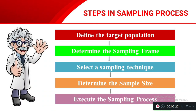Next we will see the steps in the sampling process. The sampling process has five steps: first, define the target population; second, determine the sampling frame; third, select a sampling technique; fourth, determine the sample size; and fifth, execute the sampling process.